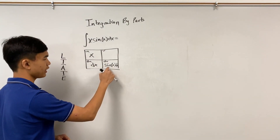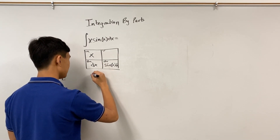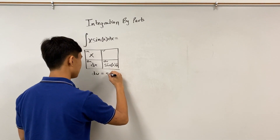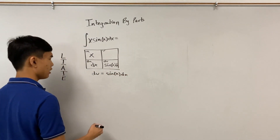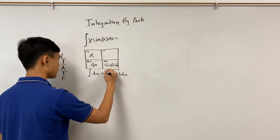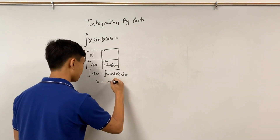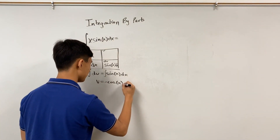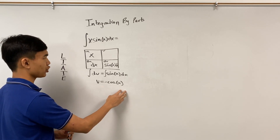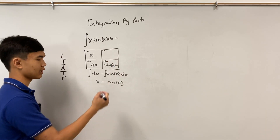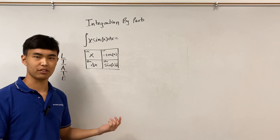Now integrate dv equals sin(x) dx to get v. Integrating both sides, the left becomes v, and v equals negative cosine of x. By the way, when doing these intermediate integrations to get v, you don't add the plus C just yet. Now that our table is filled in, we can go ahead and solve using the formula.